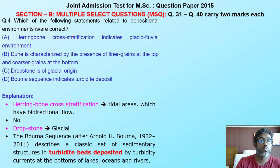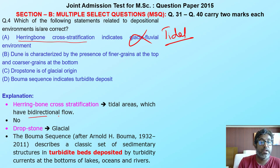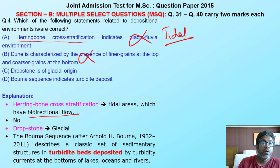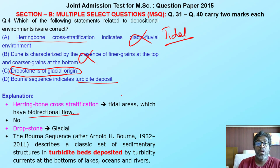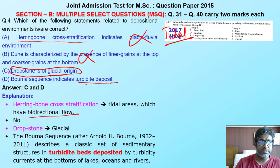The next question asks you to identify depositional environments for given sedimentary structures. Herringbone cross-stratification is not related to glacial — it is related to tidal effects with bidirectional flow. Dunes are characterized by fine grain at the top and coarse grain at the bottom — but this is not always true. Dropstone is of glacial origin. Bouma sequence indicates turbidite deposits, deposited by turbidity currents at the bottom of lakes, oceans, or rivers. My options are C and D.